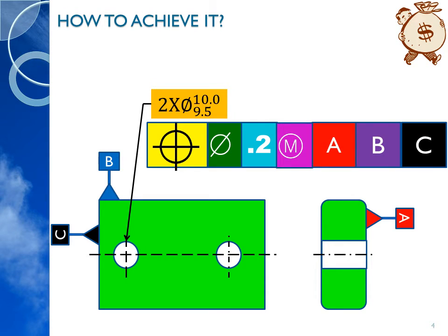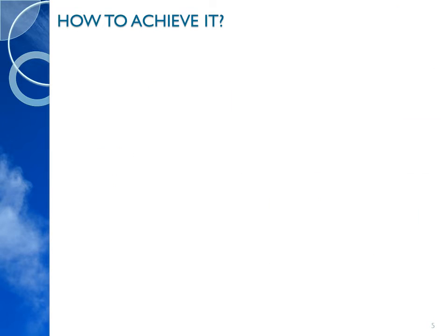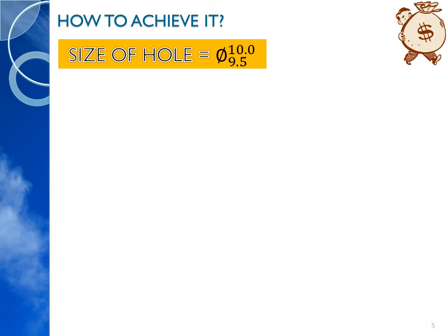datum B, and tertiary datum C. Looking at this, we can observe that the maximum material condition of this hole is 9.5, and the geometric tolerance on this feature control frame is a 0.2 cylindrical tolerance zone. Let's take these values and proceed to the calculations for understanding bonus tolerance.